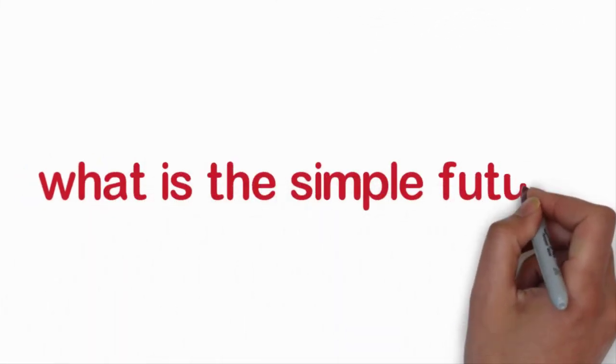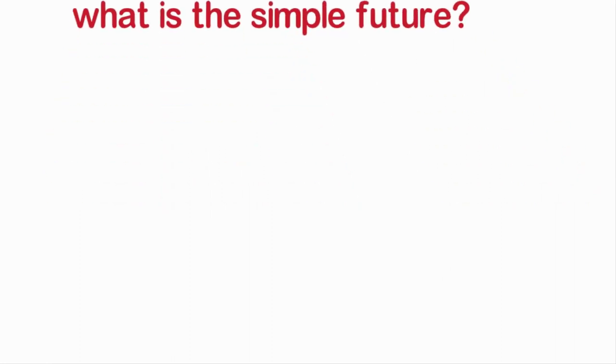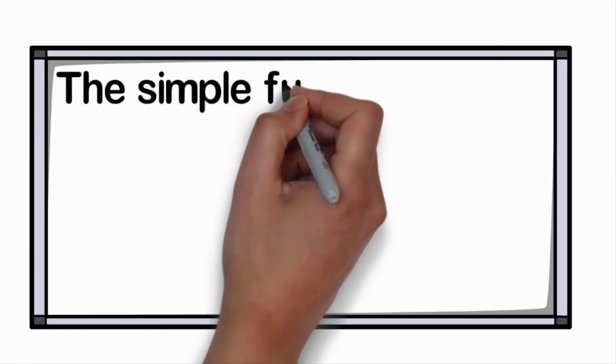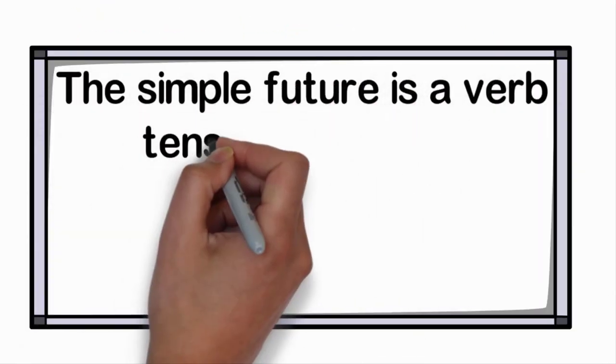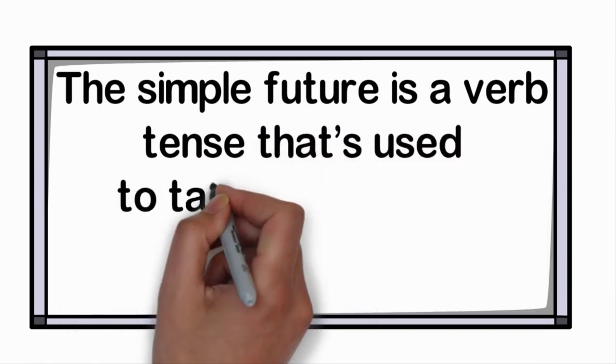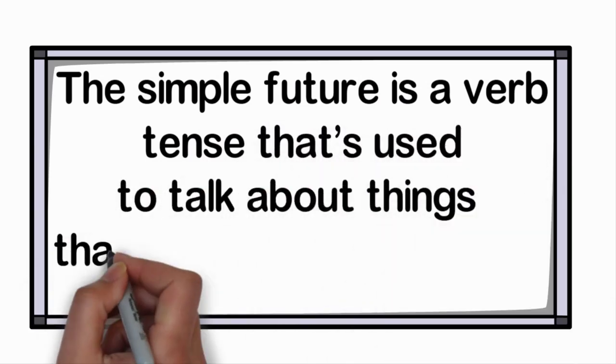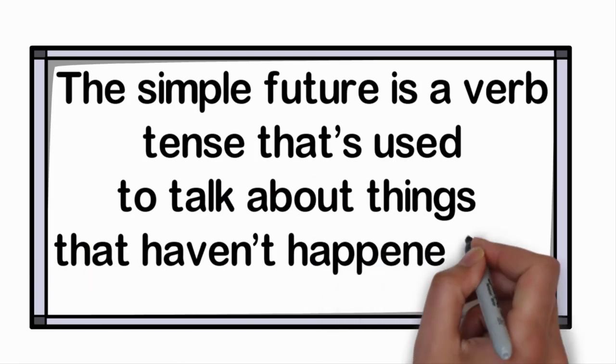What is the simple future? The simple future is a verb tense that's used to talk about things that haven't happened yet.